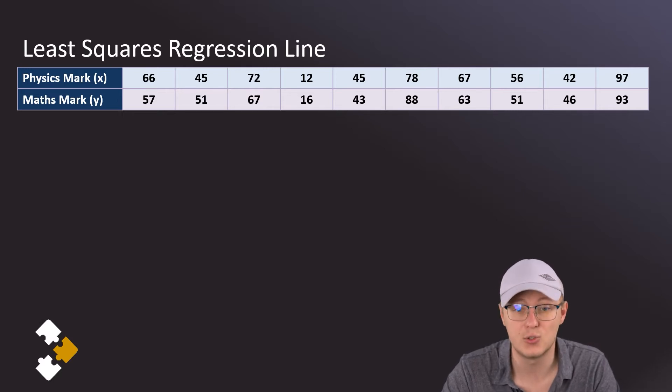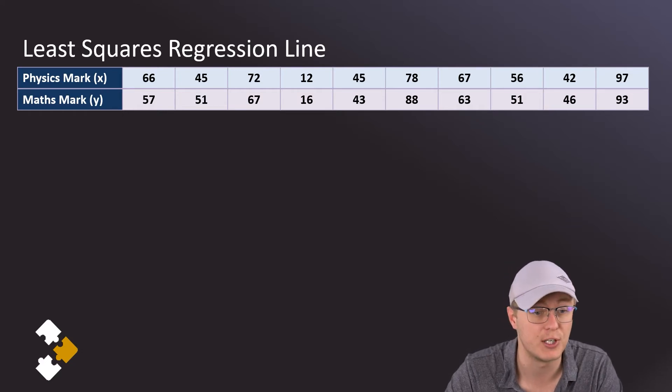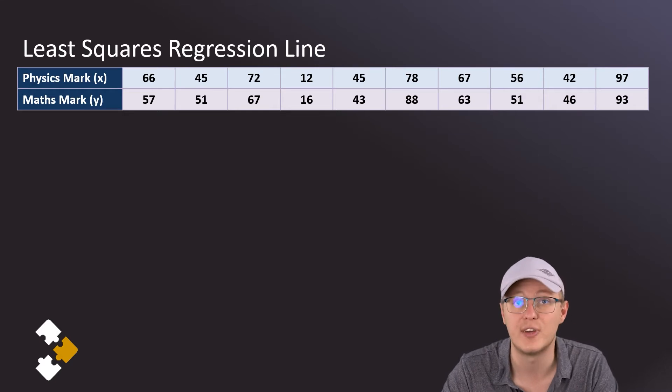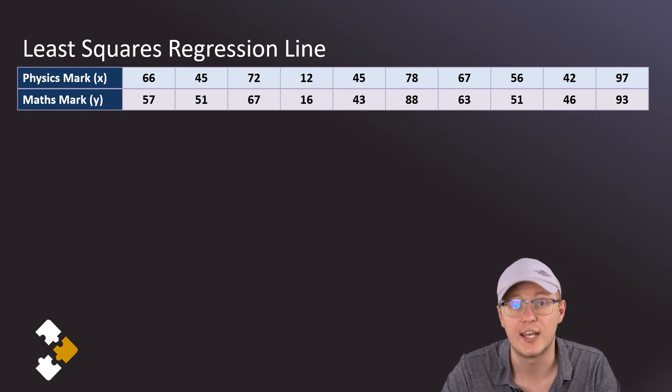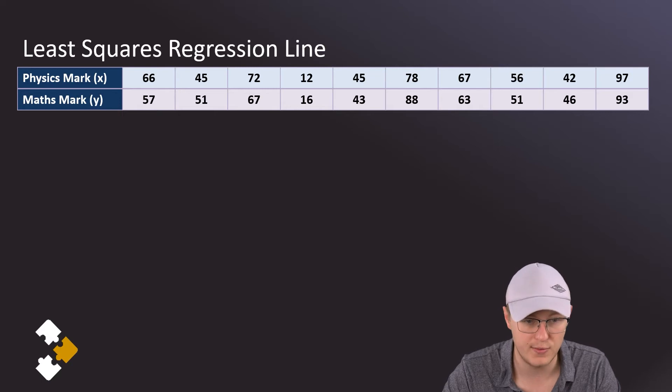Okay, so now I've entered all 10 of my x values, and then I'm going to go to the y column and enter the corresponding y values. Now it's important that we add the y value that corresponds to the x value. So for the 66 that I have with x, the y value next door has to be the 57, then the 51, then the 67, the 16, 43, 88, 63, 51, 46, and then 93.